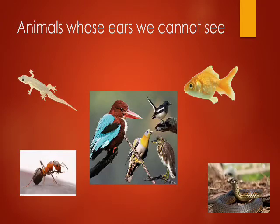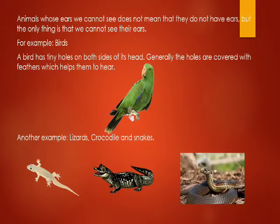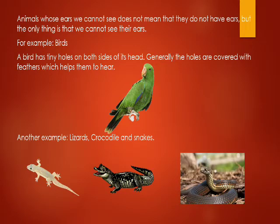Animals whose ears we cannot see does not mean that they do not have ears — the only thing is that we cannot see their ears. For example, birds. A bird has tiny holes on both sides of its head. Generally, the holes are covered with feathers which help them to hear. Another example is lizards, crocodiles and snakes.